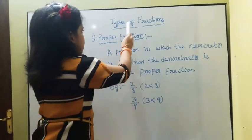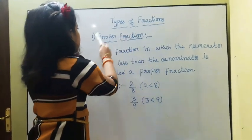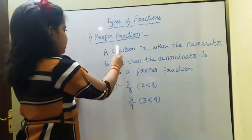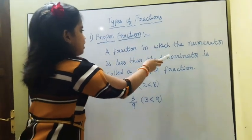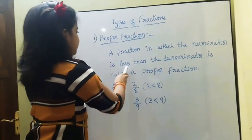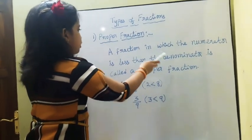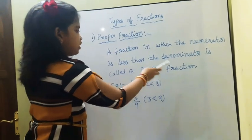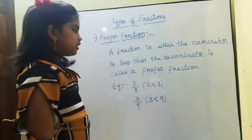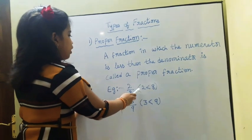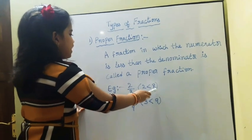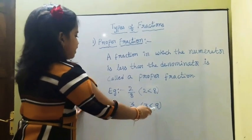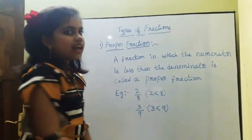Next, I am telling about types of fractions. The first type is proper fraction. A fraction in which the numerator is less than the denominator is called a proper fraction. For example: 2 upon 8, where 2 is less than 8; and 3 upon 9, where 3 is less than 9.